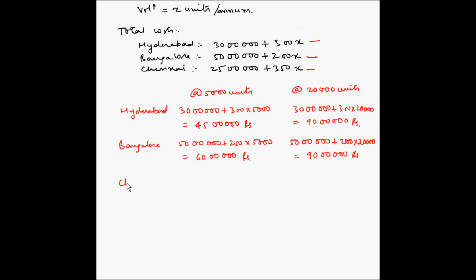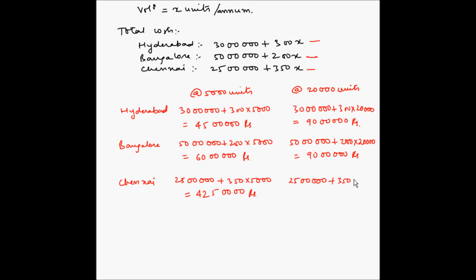For Chennai: 25 lakhs plus 350 multiplied by 5,000 equals 42.5 lakhs. At 20,000 units, 25 lakhs plus 350 multiplied by 20,000 equals 95 lakhs. We now have two points for each of the locations which can be plotted on the total cost versus volume graph.